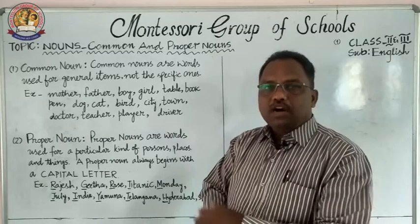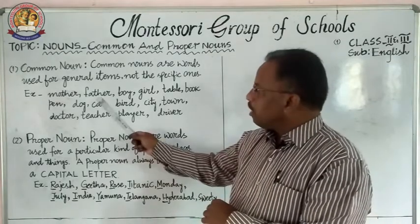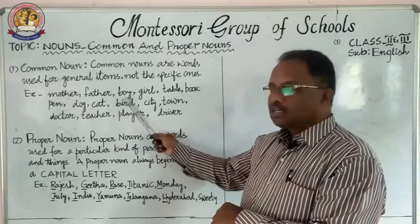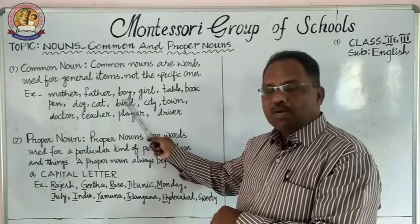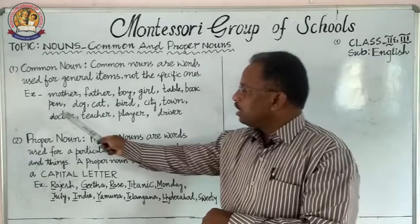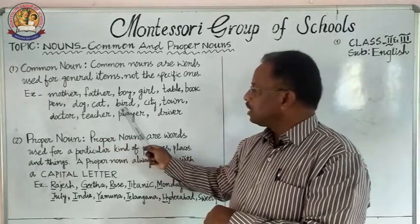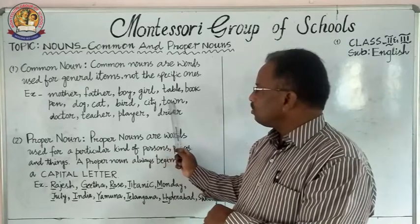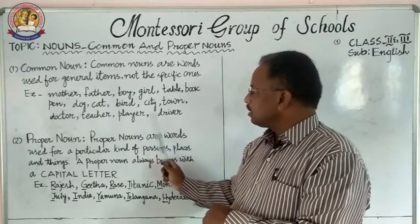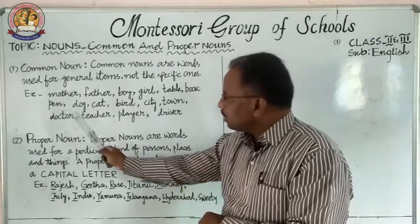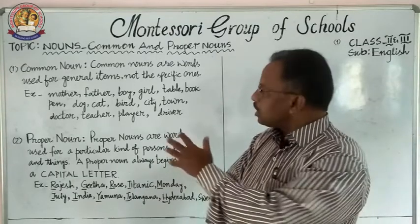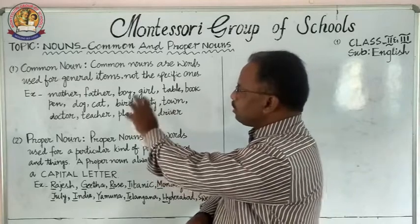For example: mother, father, boy, girl, table, book, pen, dog, cat, bird, city, family, town, doctor, teacher, player, driver. These are common nouns — common words which do not have any specific or particular name.